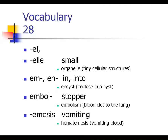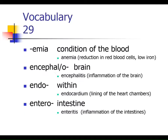The prefixes 'em-' and 'en-' both refer to 'in' or 'into.' 'Emble' means stopper, so an embolism is a blood clot that goes to the lungs and stops blood flow. 'Emesis' means vomiting — so hematemesis would be vomiting of blood. Anything ending in '-emia' is a condition of the blood: anemia would mean not enough red blood cells, and hypoglycemia is a low level of sugar in the blood.